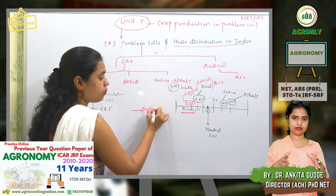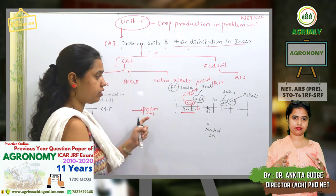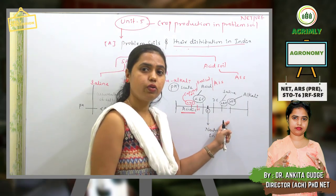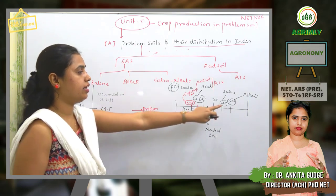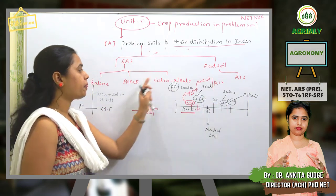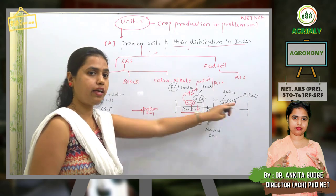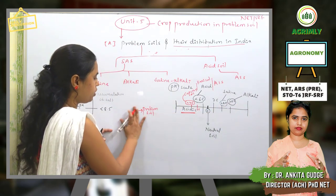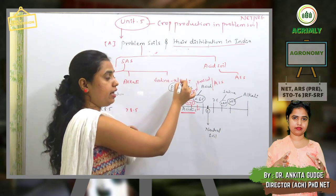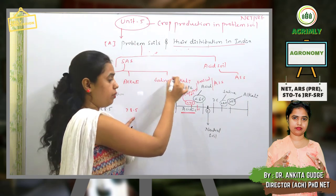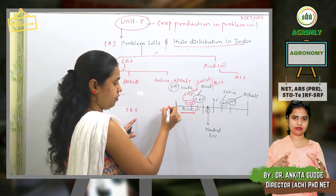The topic is problem soils. Under problem soils: saline soil has a pH less than 8.5; alkali soil has a pH more than 8.5; and saline-alkali soil has a pH less than 8.5.